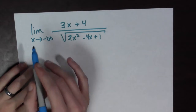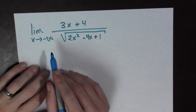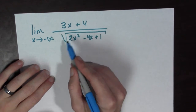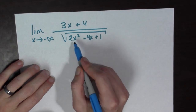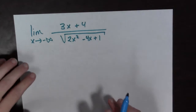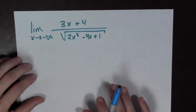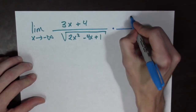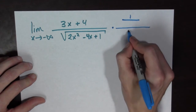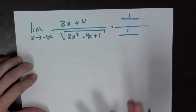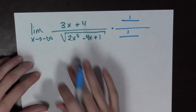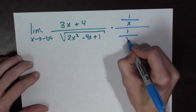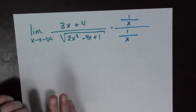Next example. We have the limit as x goes to negative infinity of 3x plus 4 all over the square root of 2x squared minus 4x plus 1. We're going to multiply by 1 over the highest power of x we see. You might say, I see x squared here, but it's underneath the square root. So we should be multiplying by 1 over x.